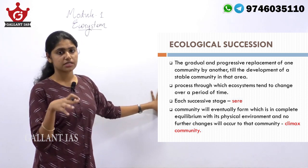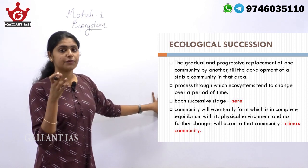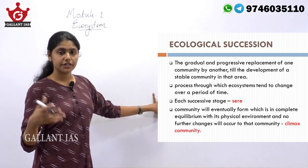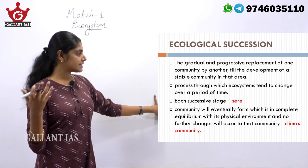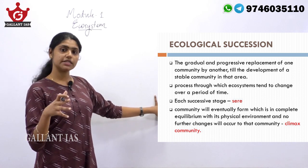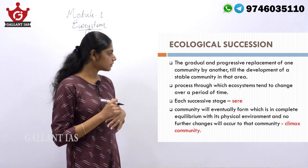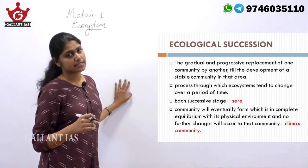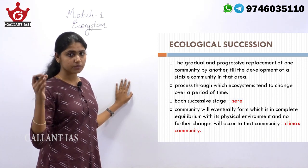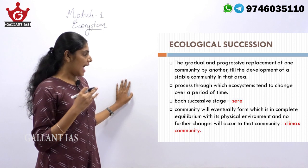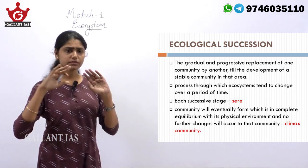Ecological succession is the process through which the ecosystem tends to change over a period of time — the ecosystem is not static but is continuously undergoing change. In ecological succession there will be successive stages, and these stages are known as sere.